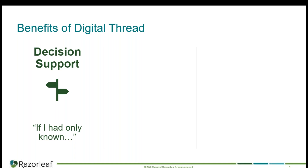The first one is decision support. Can the digital thread give you information to help support decisions? And yes, it can — it's actually very powerful at that. We all know you make better decisions when you have better information. But if it's more information that isn't decipherable, it won't always help. If you've got good, crisp, understandable information and more than you had yesterday, you're going to make a better decision today.